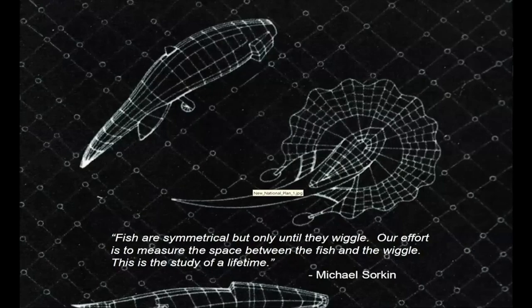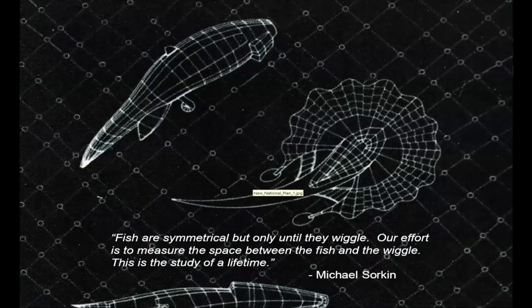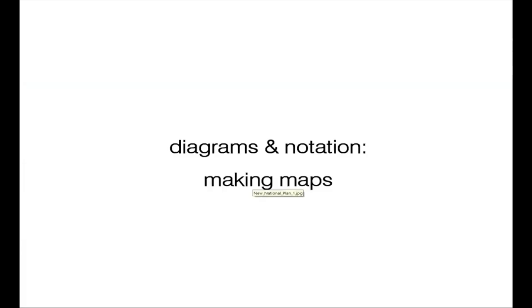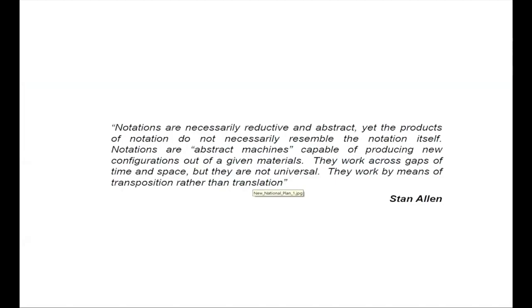I think an architect's practice as it relates to time is most aptly summed up by the late great Michael Sorkin, who wrote in his book Wiggle: 'Fish are symmetrical, but only until they wiggle. Our effort is to measure the space between the fish and the wiggle. This is the study of our lifetime.' One of the ways the architect measures the wiggle is through drawing, specifically in diagrams and notation. Stan Allen writes: 'Notations are necessarily reductive and abstract. Yet the products of notation do not necessarily resemble the notation itself. Notations are abstract machines capable of producing new configurations out of given materials. They work across gaps of time and space, but they are not universal. They work by means of transposition rather than translation. They define a loosely bound collective domain. Notation is an instrument, not an end in itself.'